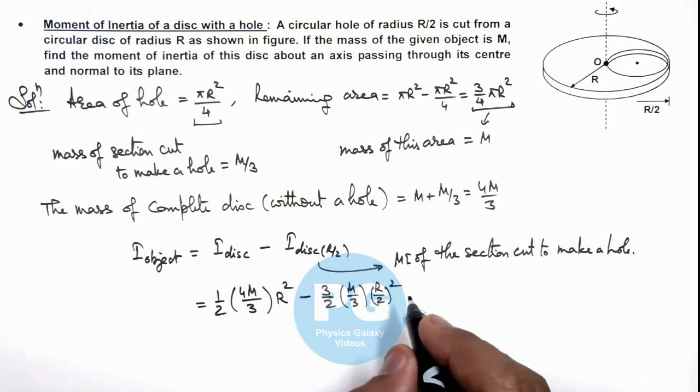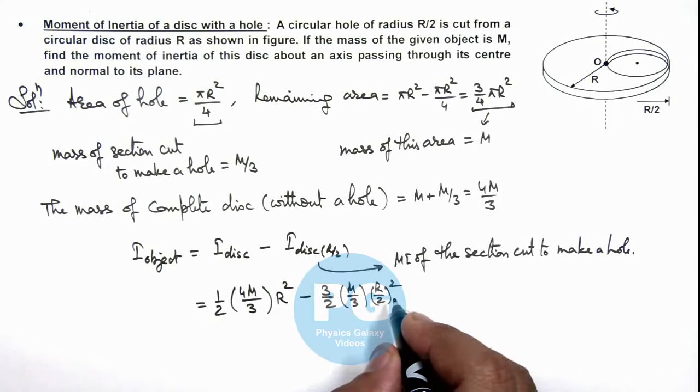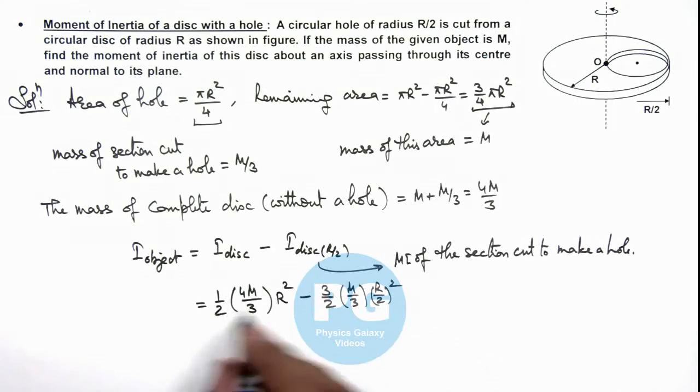And in this situation here, if we simplify this, it gives us MR² multiplied by 2/3 minus this value 1/8.